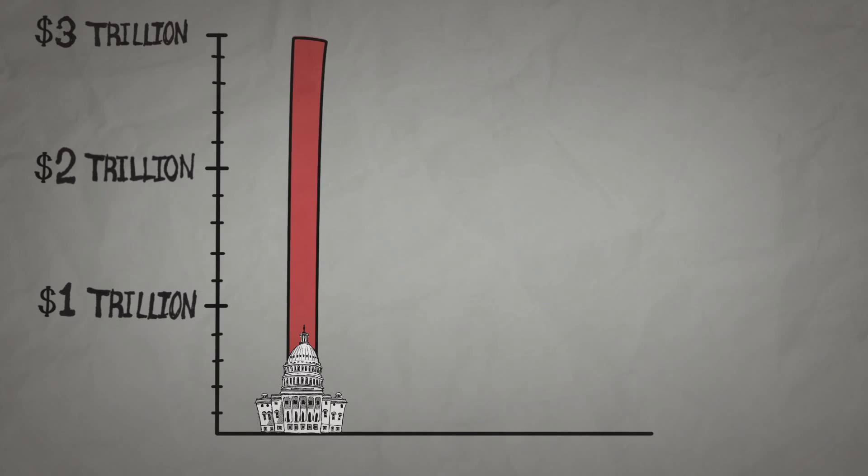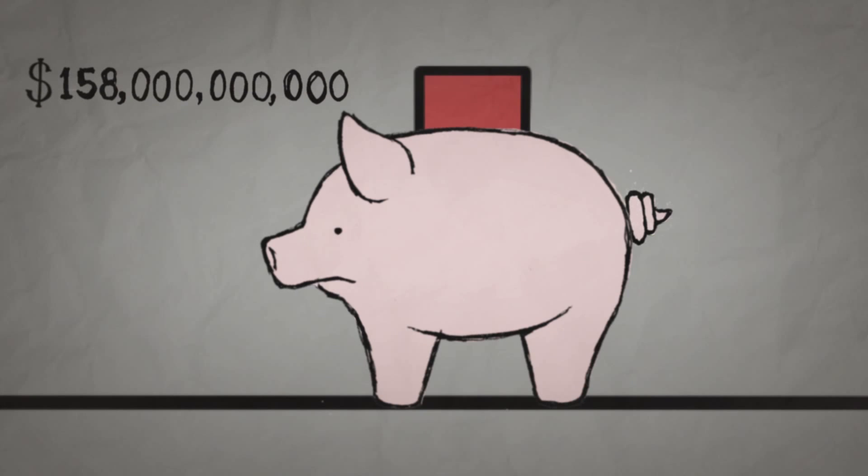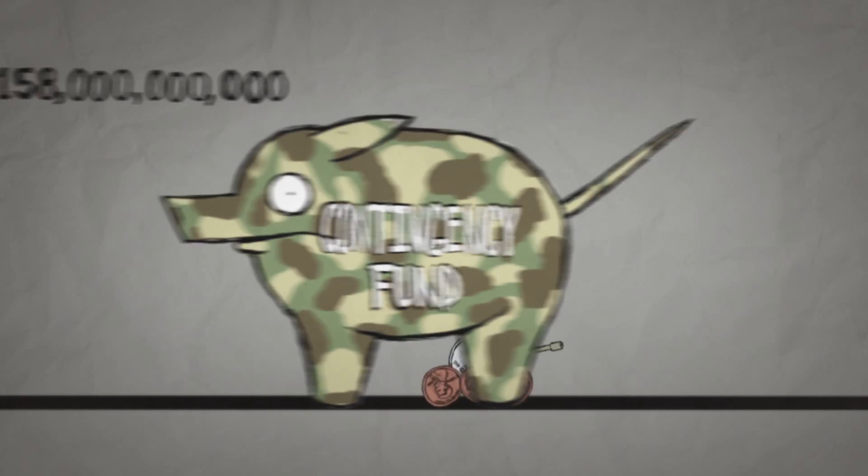And of that, that includes a direct Pentagon budget request of $717 billion at this point. That will also rise, as it always does. There's a proposal for $158 billion. Now they call it a contingency fund for the two wars, but that'll rise.